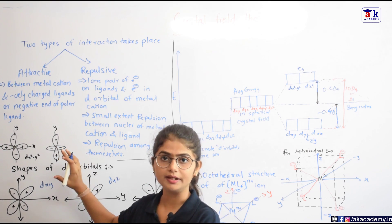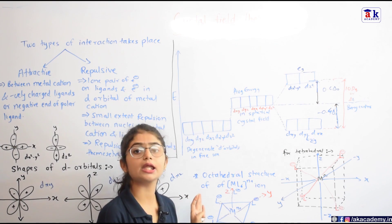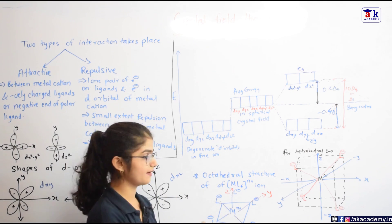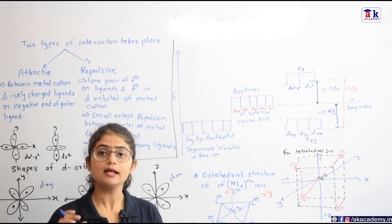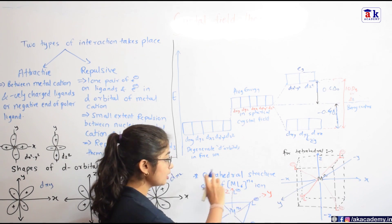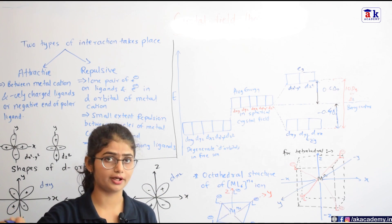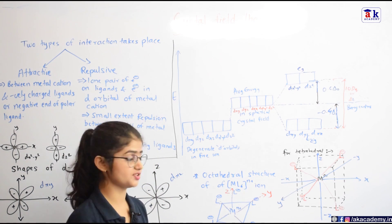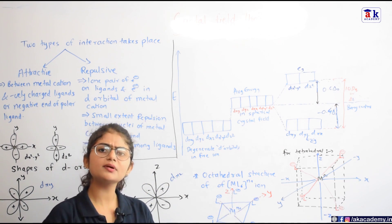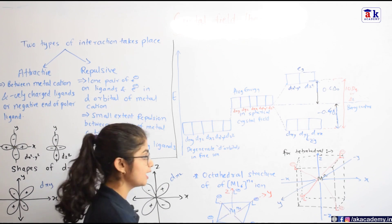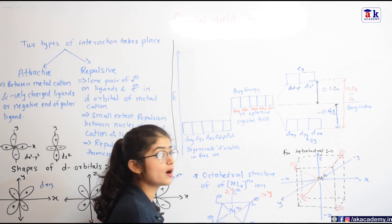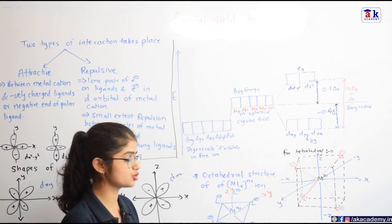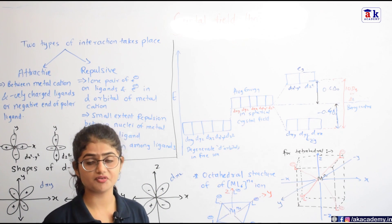In octahedral complexes, the metal cation lies at the center of an octahedron and six ligands are at the six corners. The three axes — x, y, and z — are directed along the ligands, meaning the ligands approach along the x, y, and z axes. This is a very important point to keep in mind.